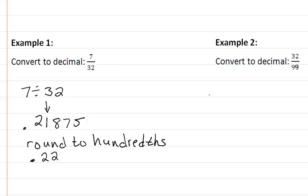In our second example, we have 32/99, which means we would take 32 divided by 99. Again, just use our calculator, and you would get 0.32, 32, 32.